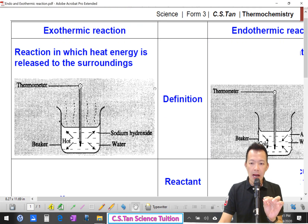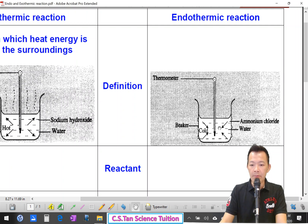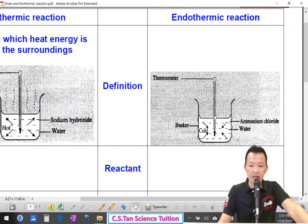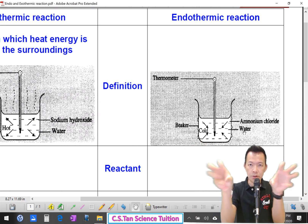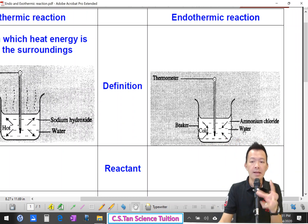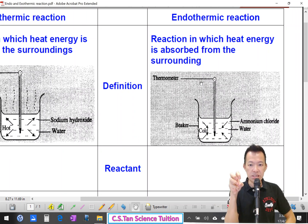Next, 下一种. How about endo? 什么叫 endo 呢? Now I prepare ammonium chloride. Ammonium chloride is actually a white-colored solid. When I add the ammonium chloride into the water, the temperature of the water decreases. 水的温度马上降低. But why? 为什么水的温度马上降低呢? Because the heat energy is absorbed. 因为热能被吸进去了, 放在它的化学物品里面. That's why the temperature will drop — 周围环境的温度却降低了. So endothermic: the reaction in which heat energy is absorbed from the surroundings. 热能被吸进去的一种化学反应.